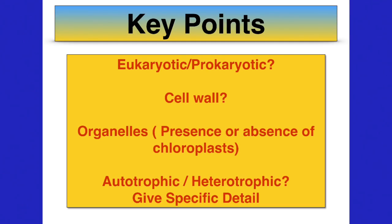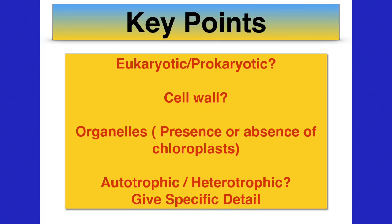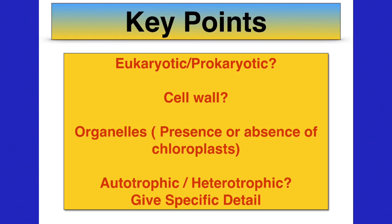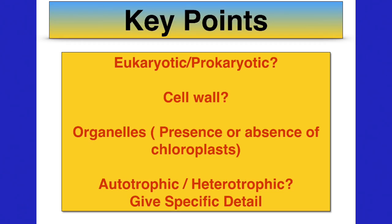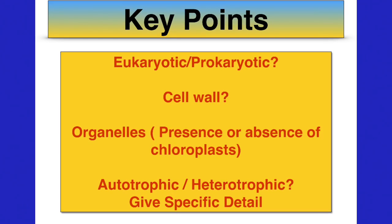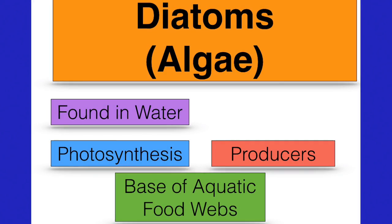Are the organisms eukaryotic or prokaryotic? Do they have cell walls? If so, what's the cell wall made of? Do they contain organelles such as chloroplasts? So can they photosynthesize? Then talk about the organism either being autotrophic or heterotrophic and go into the specific details.